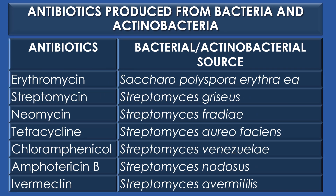Mupirocin was produced from Pseudomonas fluorescens. Erythromycin was produced from Saccharopolyspora erythraea. Streptomycin was produced from Streptomyces griseus. Neomycin was produced from Streptomyces fradiae. Tetracycline was produced from Streptomyces aureofaciens. Chloramphenicol was produced from Streptomyces venezuelae. Amphotericin B was produced from Streptomyces nodosus. And ivermectin was produced from Streptomyces avermitilis. Streptomyces belongs to the category of actinobacteria.